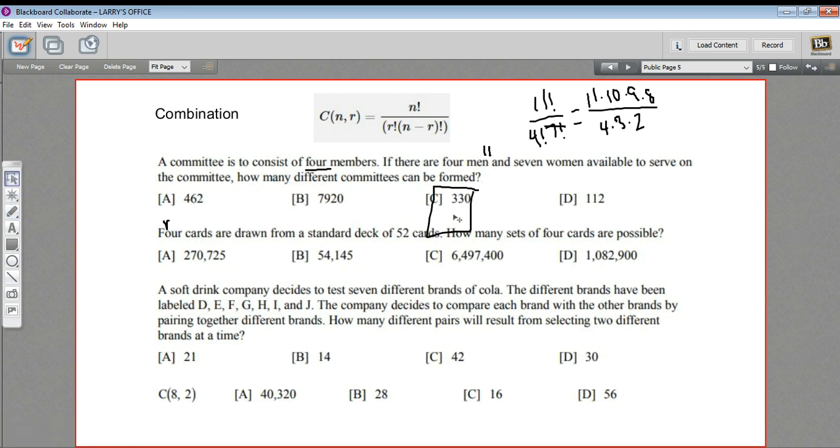Let's look at this next one. It says 4 cards are drawn from a standard deck of 52. How many sets of 4 are possible? These numbers are going to be big. You can tell already from the answer choices. N here is 52 and r is 4. So we would set up 52 factorial over 4 factorial times 52 minus 4, which is 48 factorial.